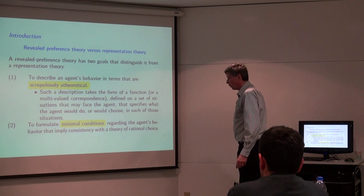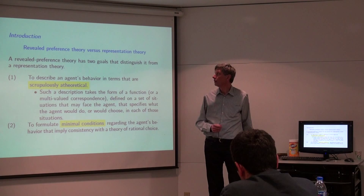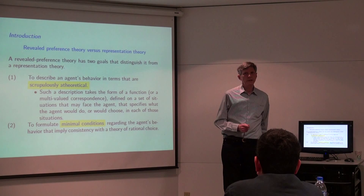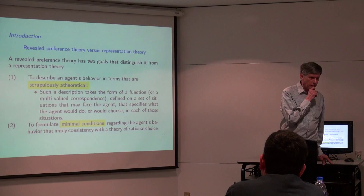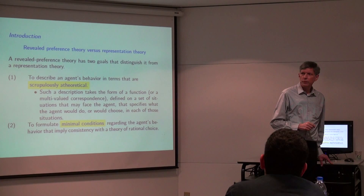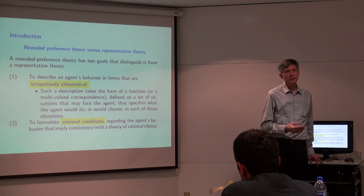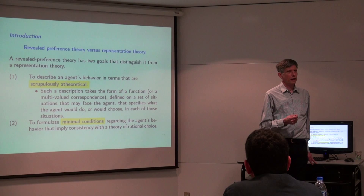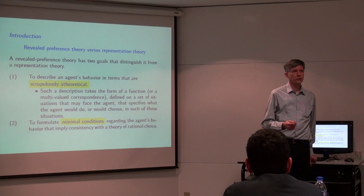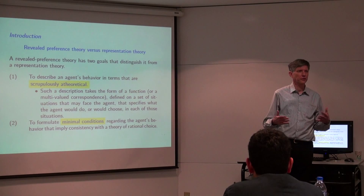I'd like to draw a distinction between two kinds of theories in decision theory. One is representation theory, and the other is revealed preference theory. In the theory of budget-constrained optimization under certainty we have a theory of utility maximization, and a primitive concept of that theory is the preference relation or the utility function, which is unobserved and has a lot of structure — at minimum, transitivity and completeness and all the nice axioms from the first year of graduate school.